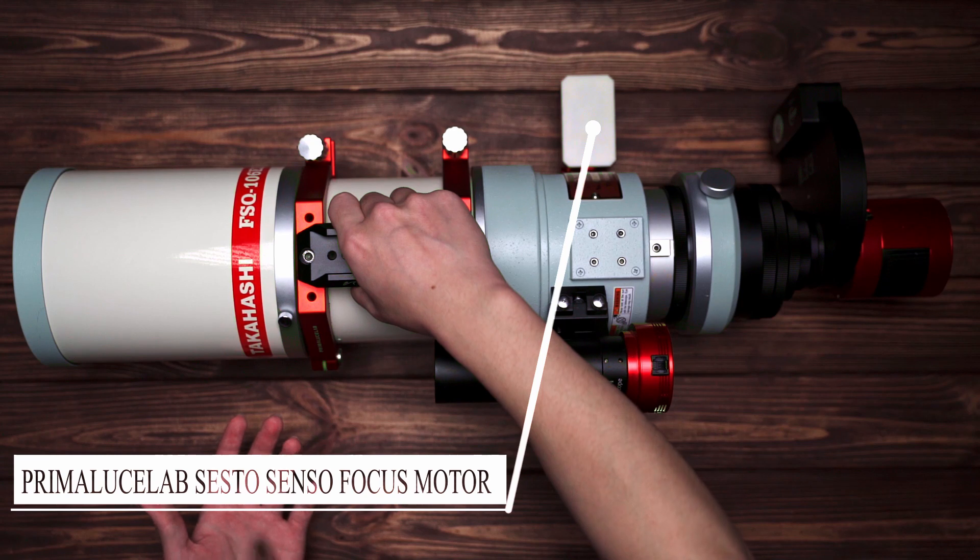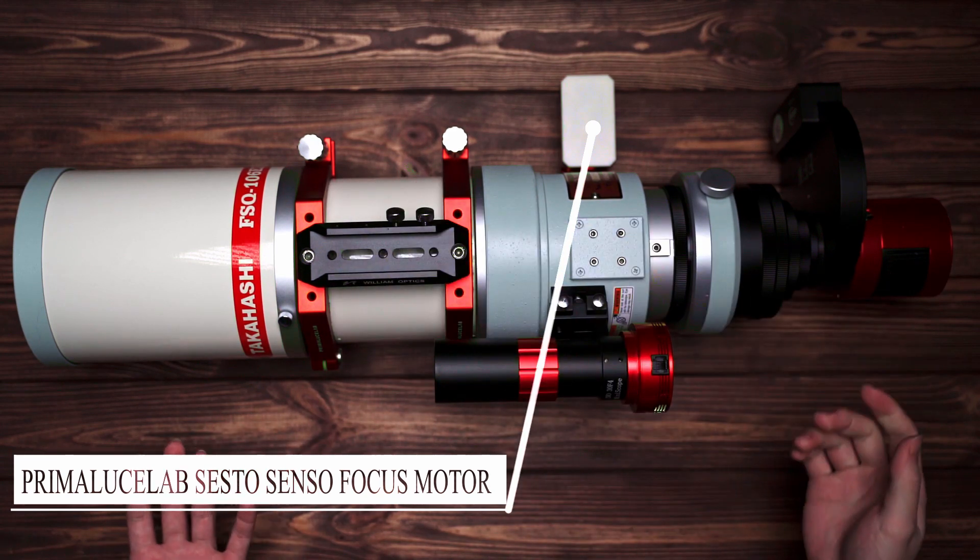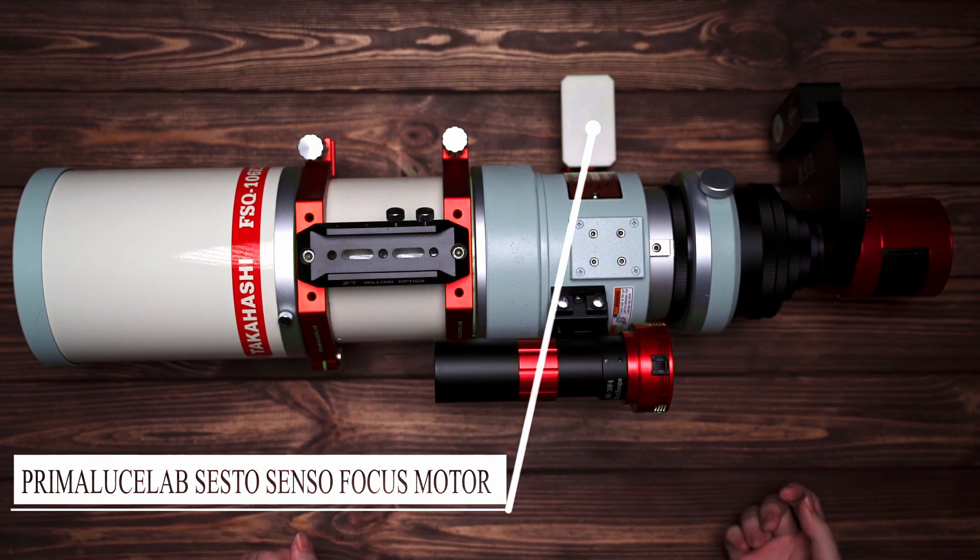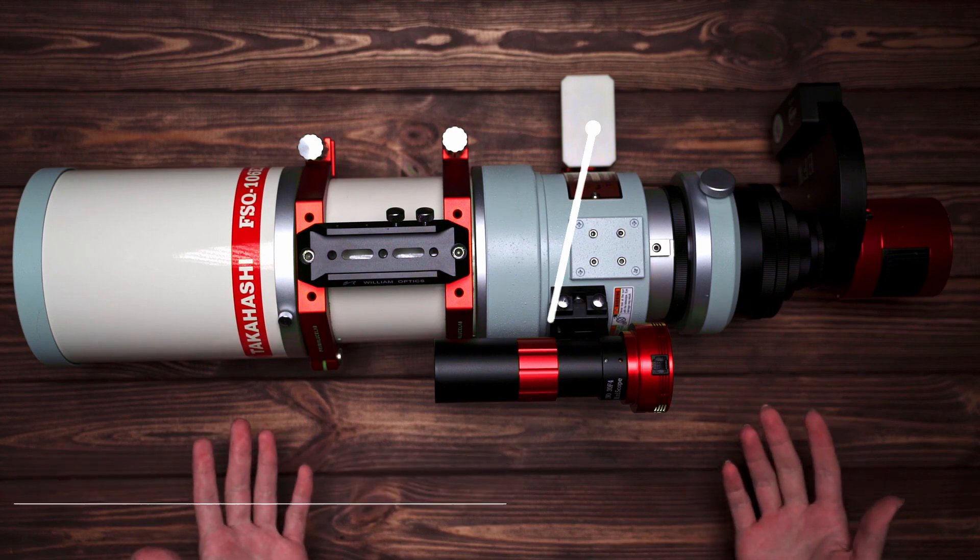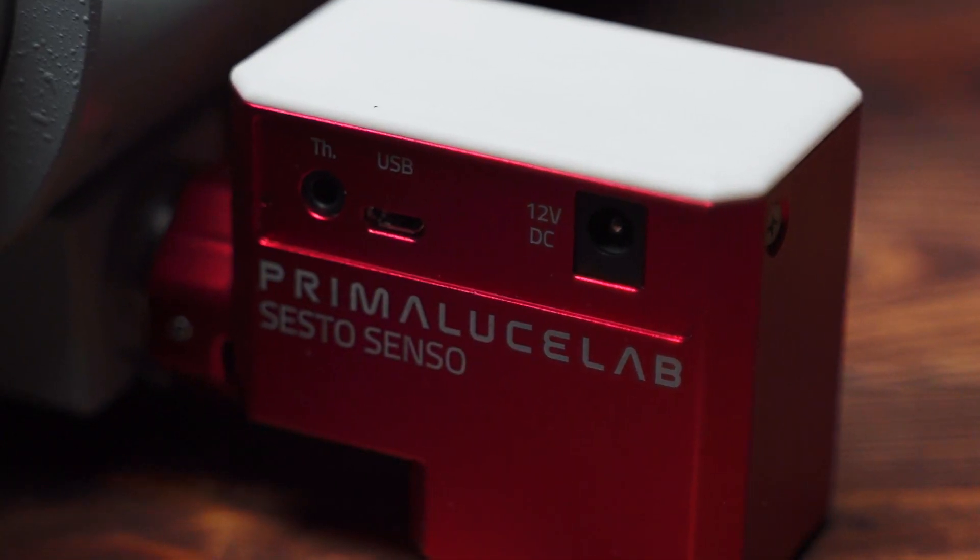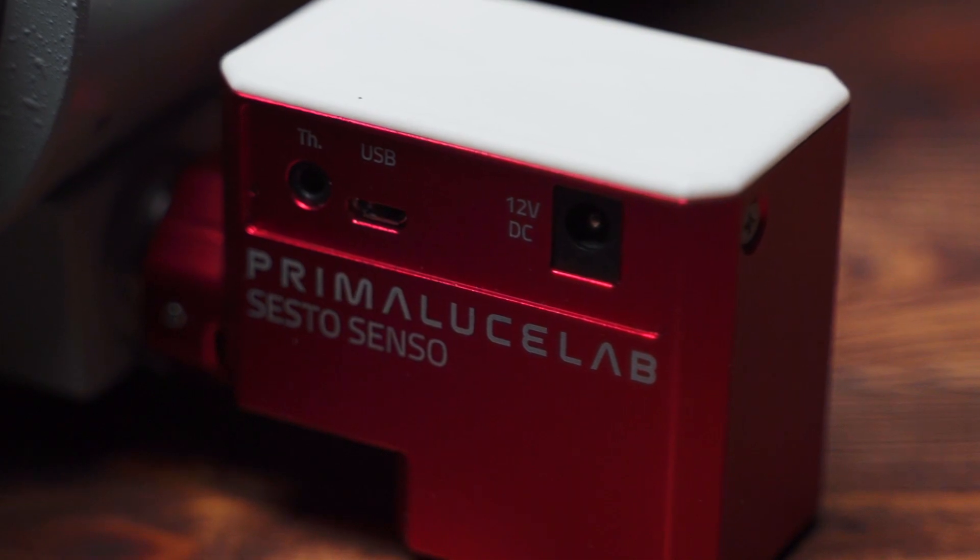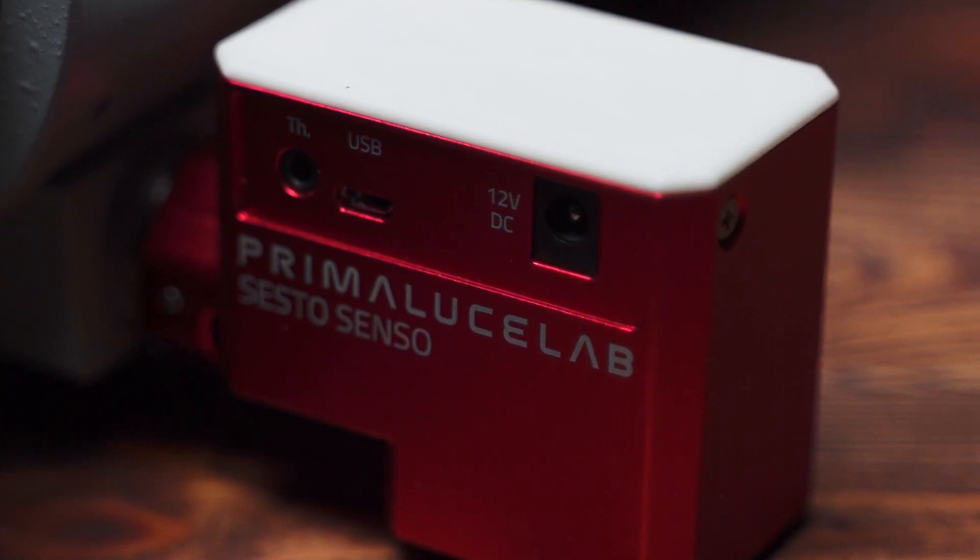The focus motor I'm using is also from Primaluce Lab, the Sesto Senso focus motor first generation. They just came up with the second generation not too long ago. I haven't looked it up yet, but the first generation works pretty well for me. And it's not that expensive, only 300 bucks, which provides you very fine focus.